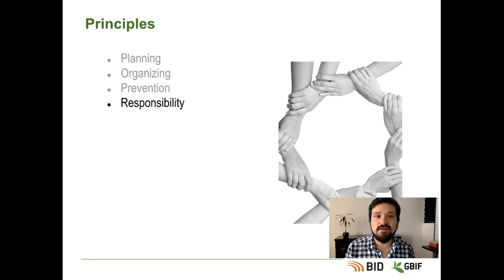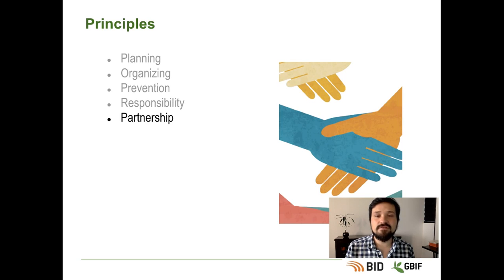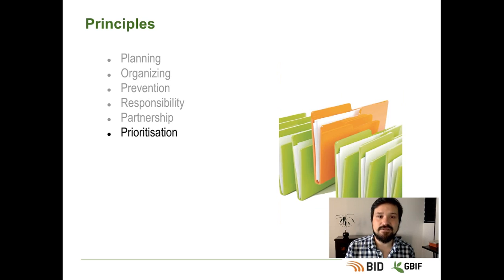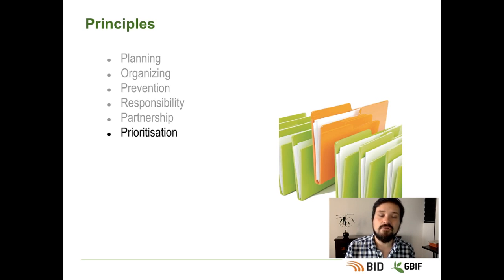Responsibility for data cleaning is shared and belongs to all. Partnership: if data custodians can develop partnerships with the key users, then the users are likely to provide feedback on errors that they come across when using the data. Prioritization helps to reduce cost and improves efficiency — it is better to concentrate on those records which can be cleaned at the lowest cost or for which there is a high demand from the users.